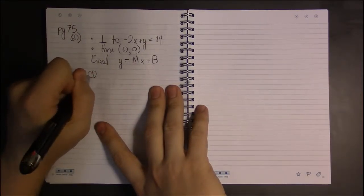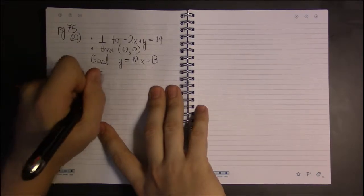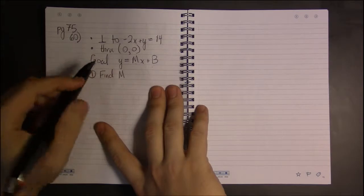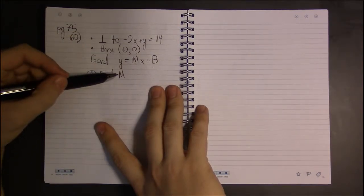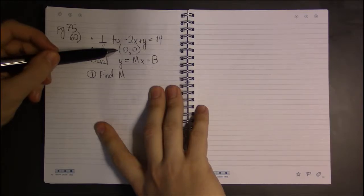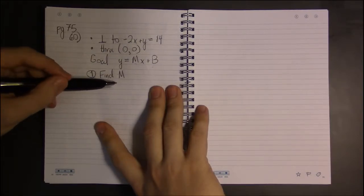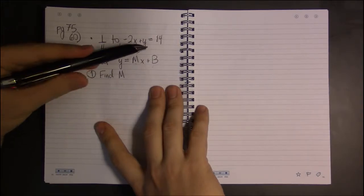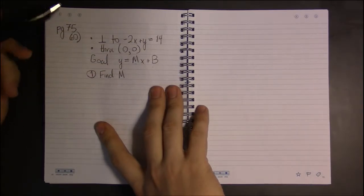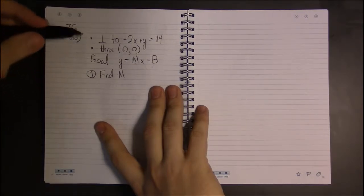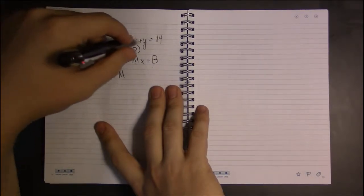So let's start off and find m. Well, unlike before, we only have one point. We don't have two points, so we can take the change in y divided by the change in x. We can't do that in this case because we need two points and we've only got one. Now our slope is going to have to be found by looking at the perpendicular line.